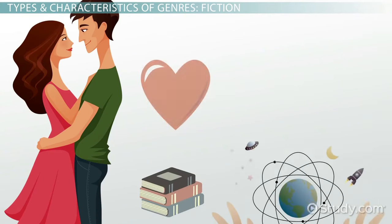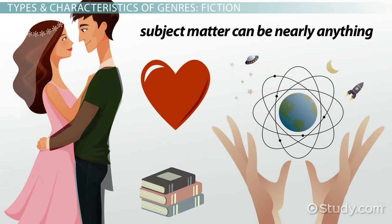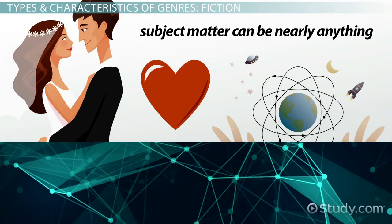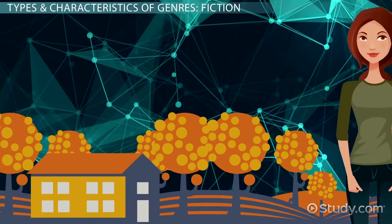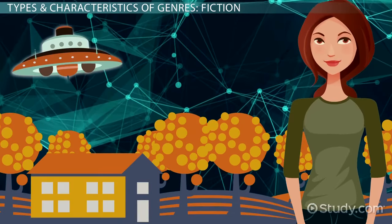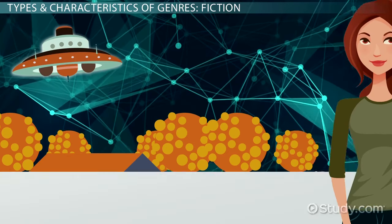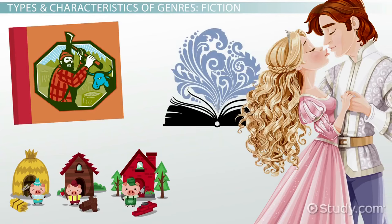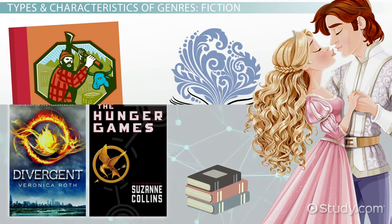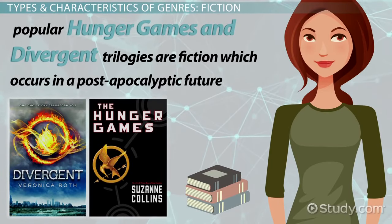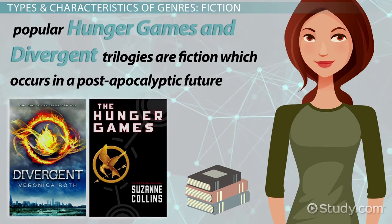Since it is based on the imagination, the subject matter in fiction works can be nearly anything. Fiction can take place in the present day, the future, or the past. It can incorporate the most fantastical ideas or follow everyday life. Some examples of works of fiction are legends, folk tales, fairy tales, short stories, and novels. For example, the popular Hunger Games and Divergent trilogies are fiction, which occurs in a post-apocalyptic future.